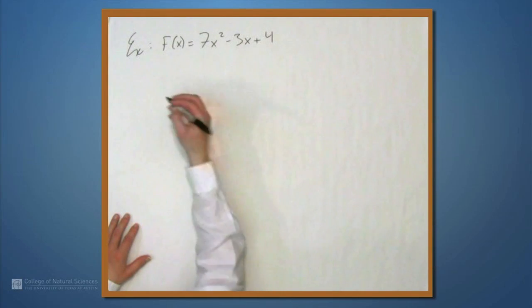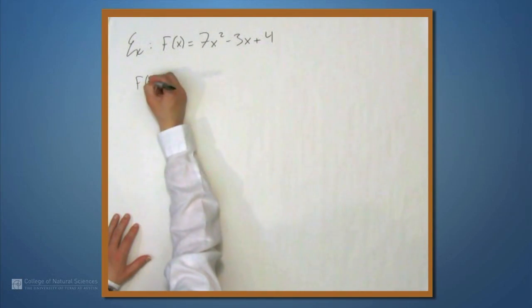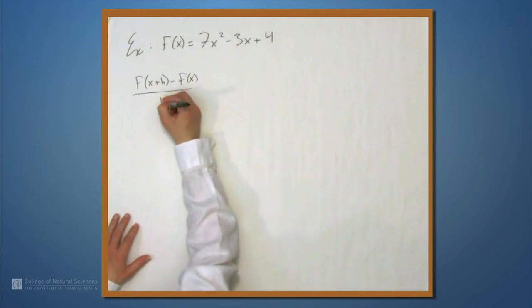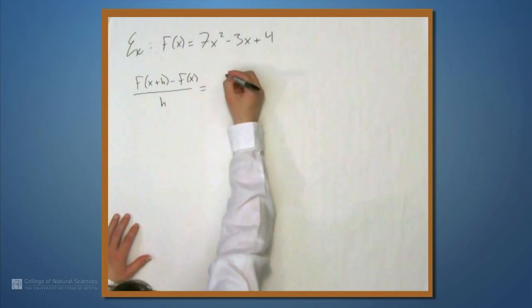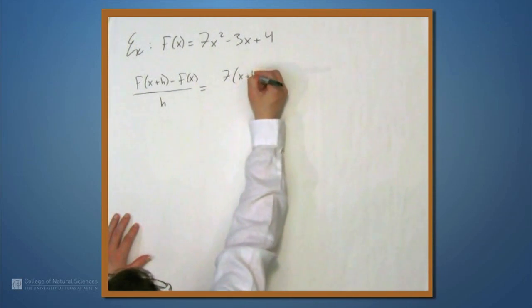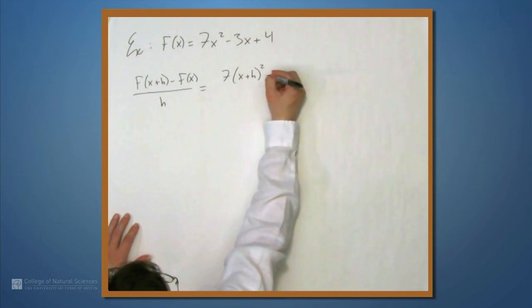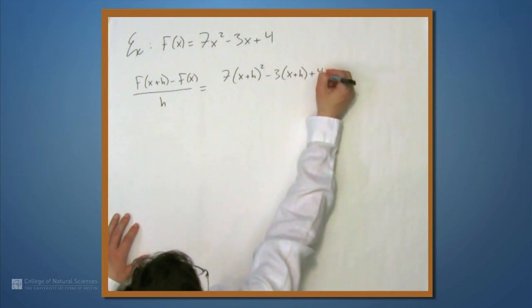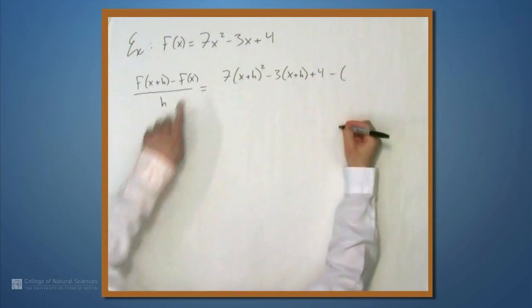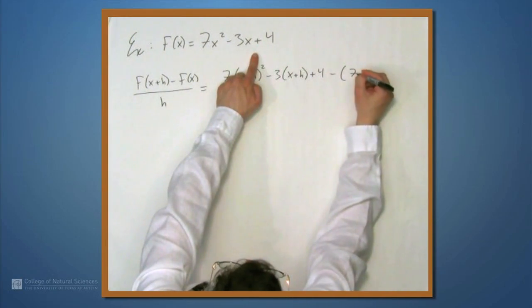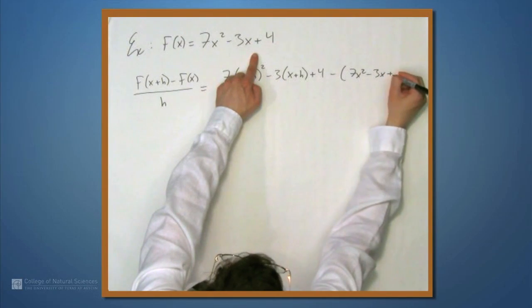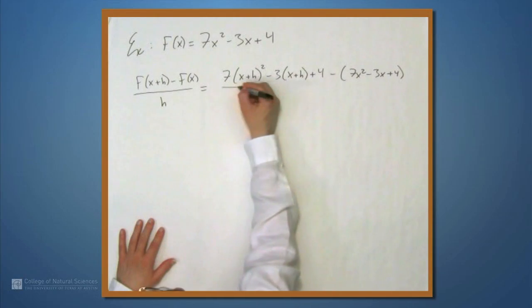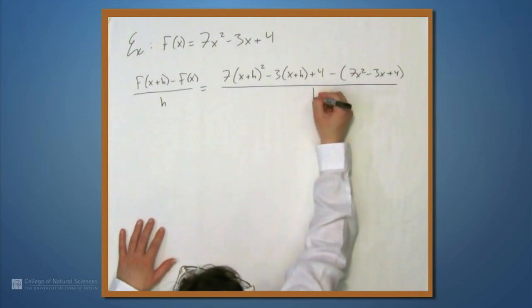The difference quotient is that ratio from before without the limit. So f of x plus h minus f of x all over h equals 7 times the quantity x plus h squared minus 3 times the quantity x plus h plus 4 minus f of x, which is minus 7x squared minus 3x plus 4. Don't forget the parentheses around the expression for f of x. And this whole thing over h.